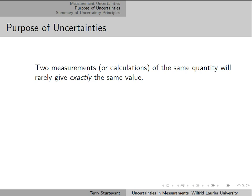So, what is the purpose of uncertainties? Two measurements or calculations of the same quantity will rarely give exactly the same value. The purpose of uncertainties is ultimately to allow two numbers to be compared.